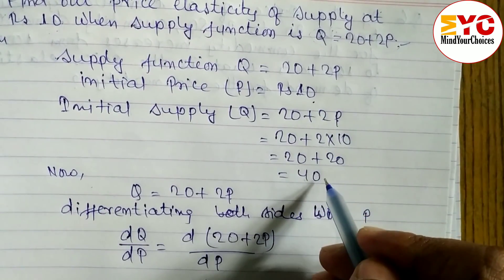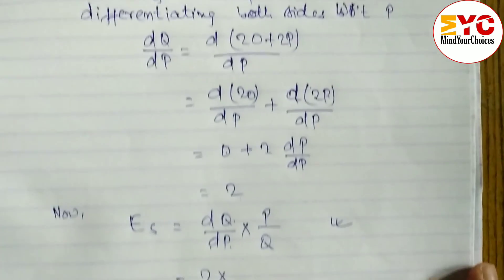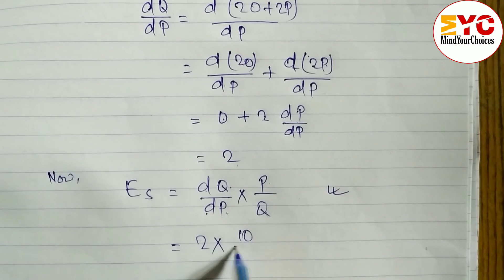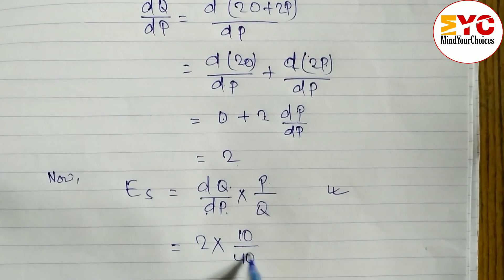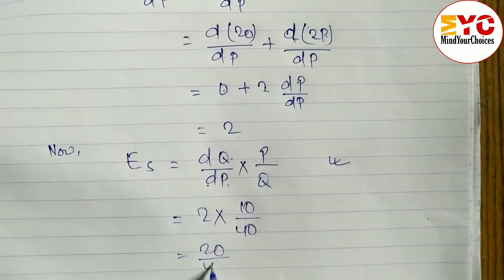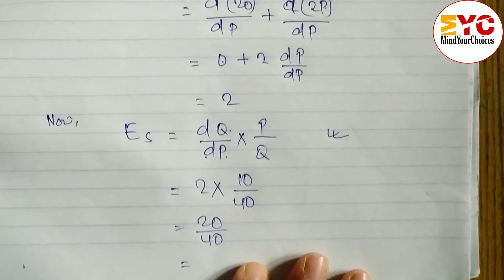So we can write 10 by 40. 10 divided by 40, 10 into 2 is 20 divided by 40, and when you divide this by 2, we get 0.5.